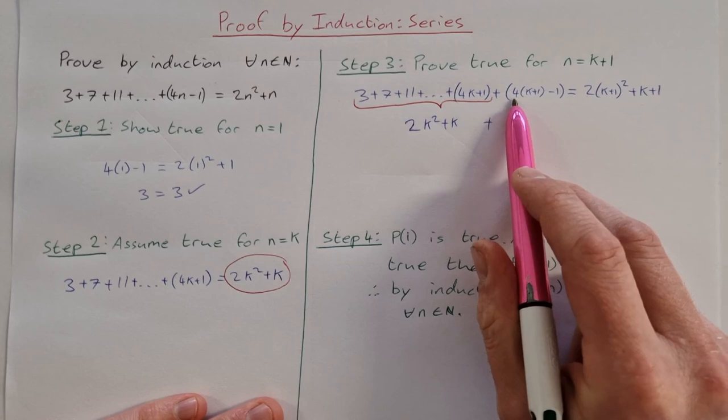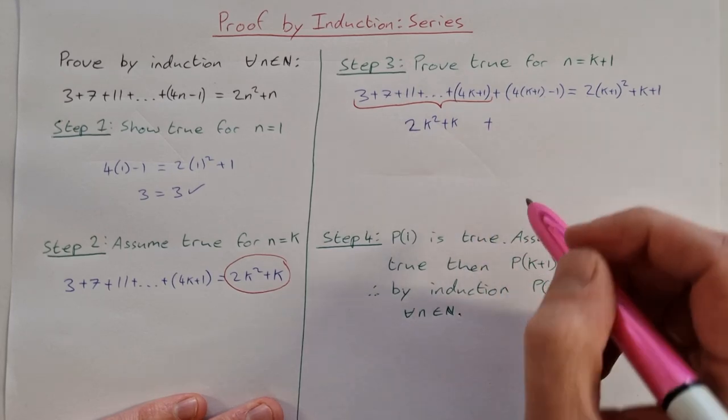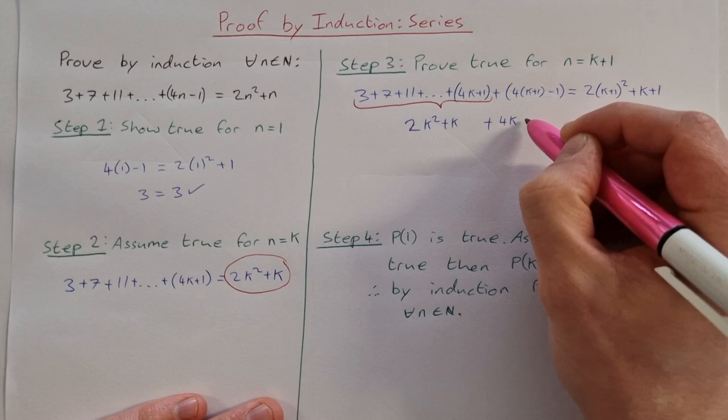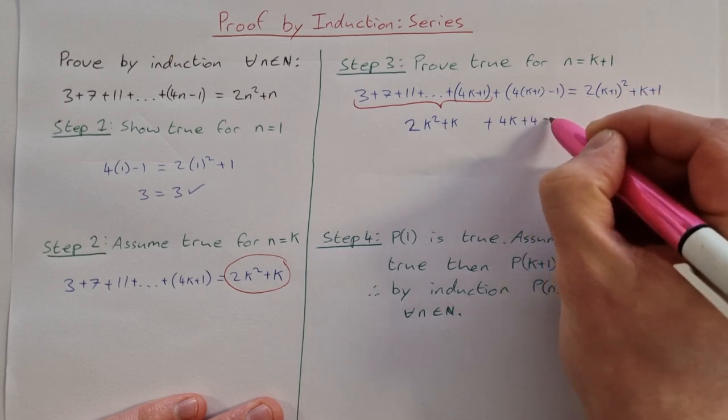Then I have plus, I'm going to multiply this out just to have it multiplied out now, so that's 4 by k is 4k, 4 by 1 is 4, and then minus 1.